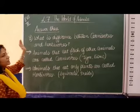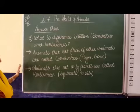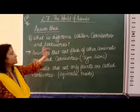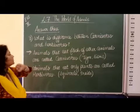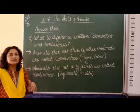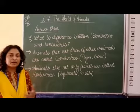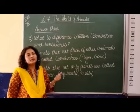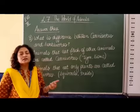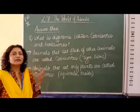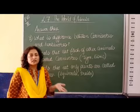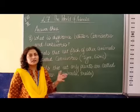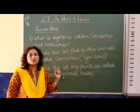Now, children, third question: what is the difference between carnivores and herbivores? Carnivores are the animals that eat only the flesh of other animals; they are called carnivore animals. Like lion, tiger, cheetah — generally they hunt and they eat other animals. They don't eat any plants. So these are called carnivore animals.